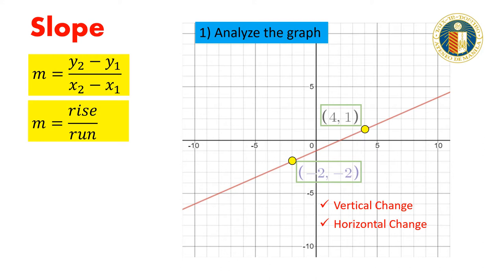Notice that if we move from point negative 2, negative 2 to the point 4, 1, we would have to move 3 units up and 6 units to the right. So, the vertical change would be 3, and the horizontal change would be 6.